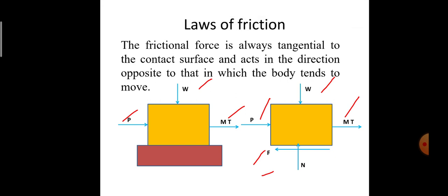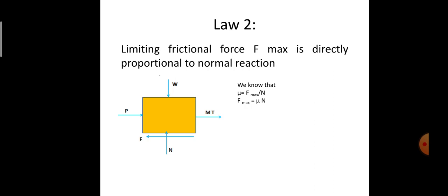The second law states that the limiting frictional force F_maximum is always directly proportional to the normal reaction. Limiting frictional force is the maximum amount of frictional force which can be developed by the material. It is the frictional force which the object can develop to its utmost extent, denoted by F_maximum. The free body diagram of the load pattern illustrates this relationship.